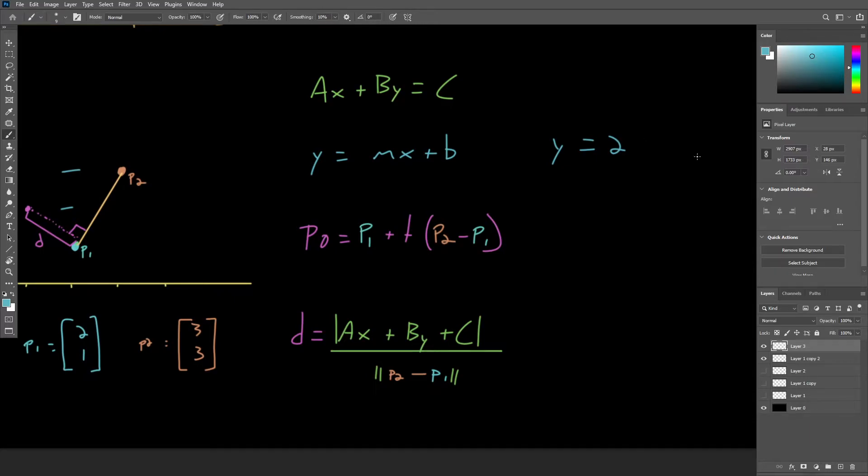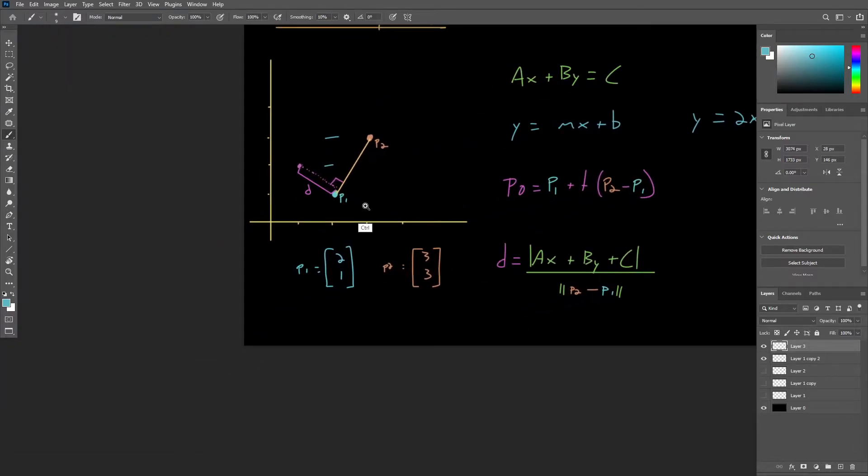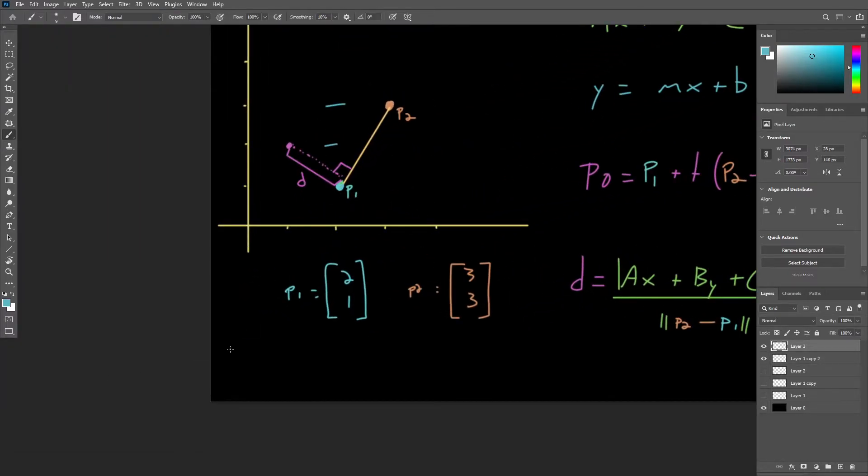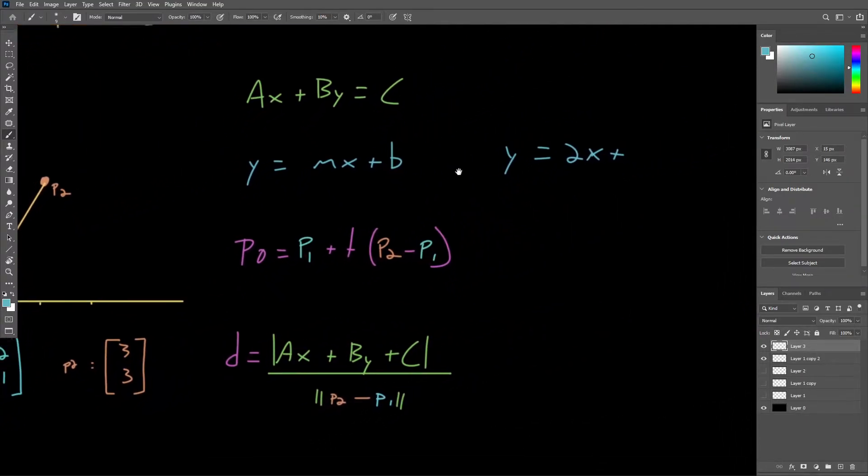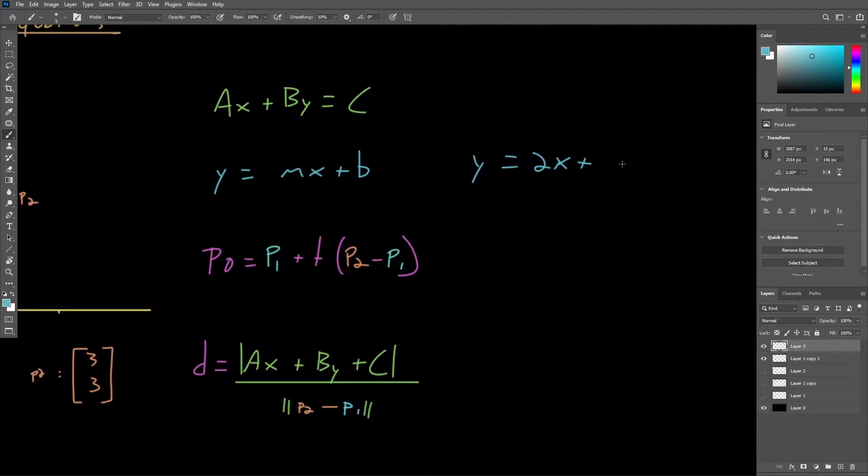So Y equals 2X plus, and then we need to find the Y-intercept. If we extended this line all the way down here, we would find that we intercept the Y-axis at Y equals negative 3. So the slope-intercept form of this line equation is Y equals 2X minus 3.